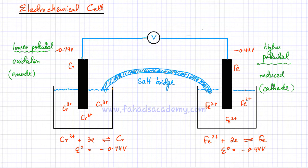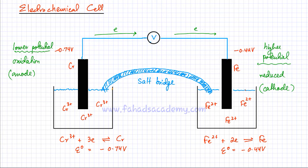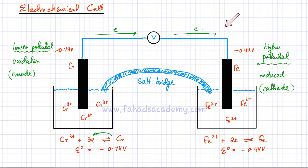So the movement of electrons is from the lower potential side to the higher potential side. Once you connect the two electrodes together, the reaction is no longer reversible — chromium loses electrons and gets oxidized at the anode. At the cathode, the Fe²⁺ ions gain those electrons and get reduced. The arrows indicate these directions of reaction at each electrode.